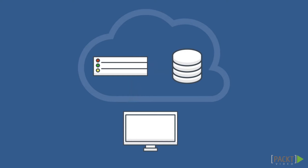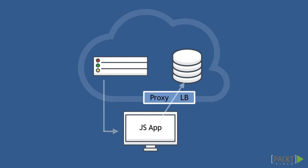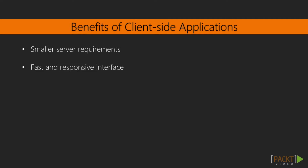In contrast, client-side applications take advantage of the increasing power of personal computers to render the user interface directly in the browser. In addition to the initial HTML page, a separate JavaScript application is also downloaded that controls all or at least a percentage of the search interface functionality. This JavaScript application can then make search queries directly to our Elasticsearch instance. Using a client-side application gives us smaller server requirements and a faster user experience, because all key interactions are happening in the browser and we can display results as soon as they return from Elasticsearch.